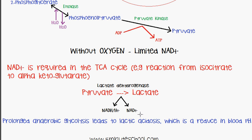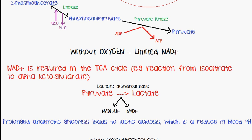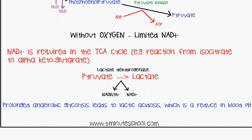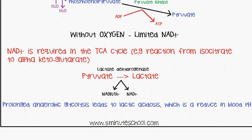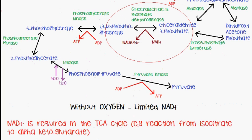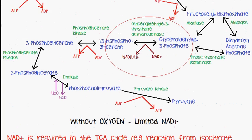However, if anaerobic glycolysis is prolonged, it eventually leads to lactic acidosis, where the blood becomes too acidic, which can eventually lead to death. It usually occurs for between about 20 seconds to 1 or 2 minutes, so it doesn't last for a very long time. Afterwards, aerobic glycolysis carries on if the body returns to a supply of oxygen.